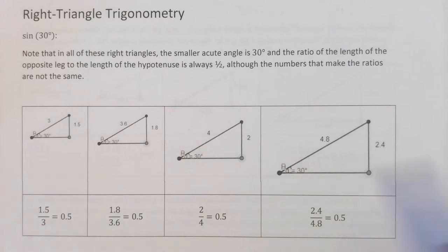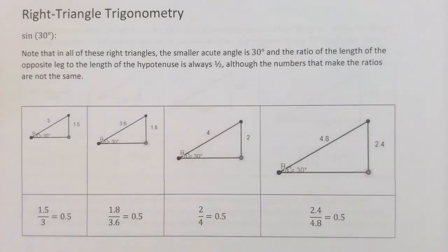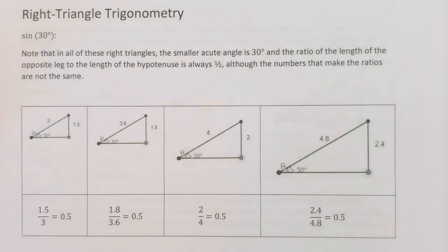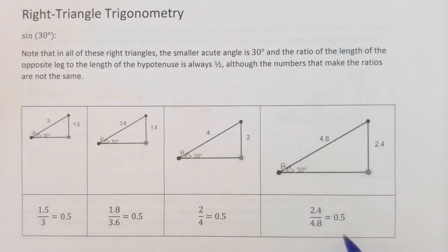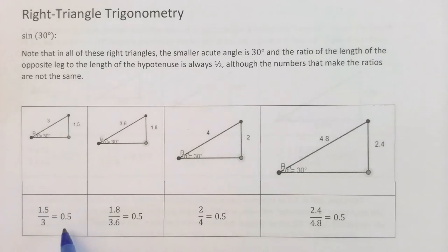That ratio of opposite leg to hypotenuse is called the sine of 30 degrees. It's abbreviated as sin(30°). It turns out if you have a right triangle and one of the acute angles is 30°, this sine ratio is always 0.5. On the other hand, if you have 35 degrees you're going to get a ratio bigger than 0.5.